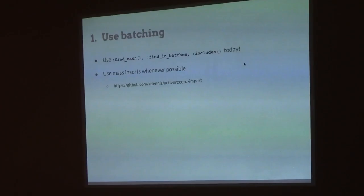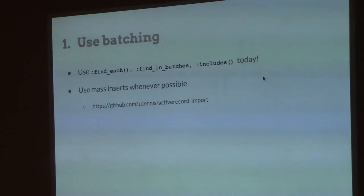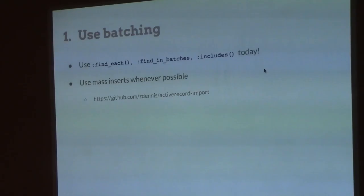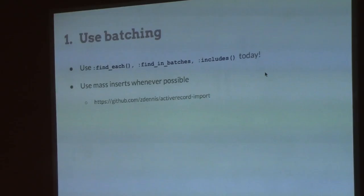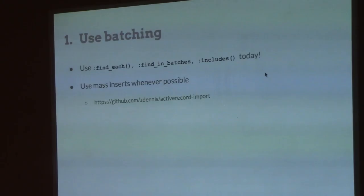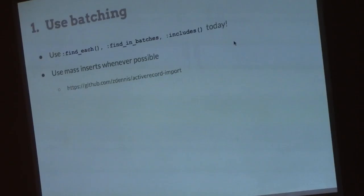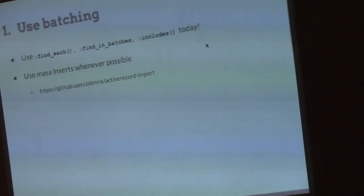We'll start with something fairly simple: use batching, don't use .find. This is something you can start today — you should always start today. A lot of other things you can procrastinate on, but this one you should do today. find_each means that instead of doing a SQL select during a loop and calling it multiple times, you can select 1,000 records from the database at once. If you get one group like that, you can get a bunch of IDs and then get all the objects right away. Definitely use that today.